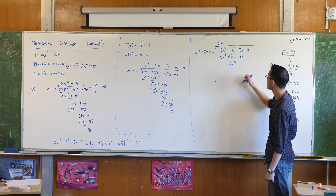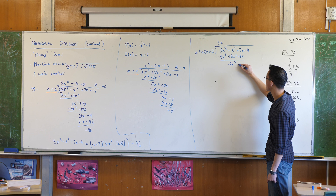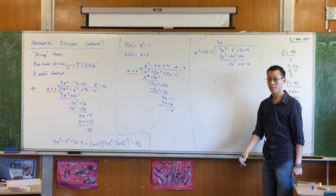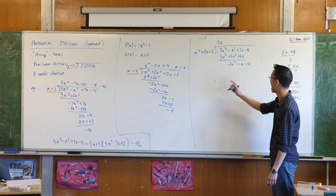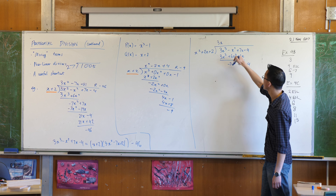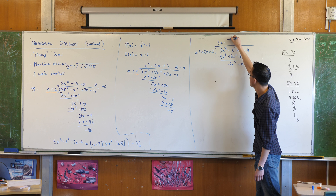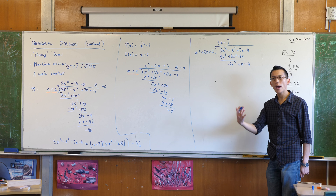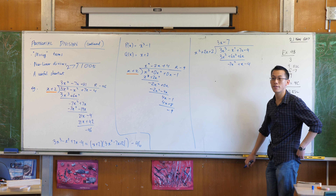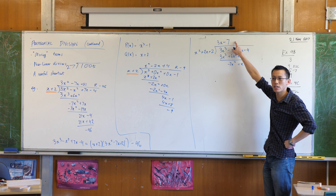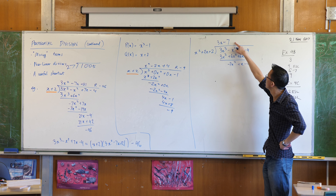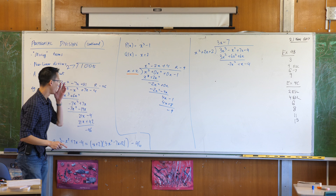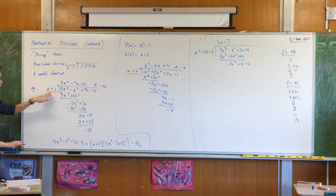So I go back and do the same process — I multiply through carefully. 3x times x² gives 3x³, times 2x gives 6x², times 2 gives 6x. Now I do my subtraction. The 3x³ cancels out as it should. Then −x² minus 6x² is −7x². This also comes along for the ride: that's going to be +x. And then take away 4.